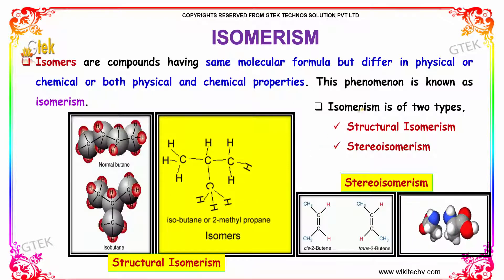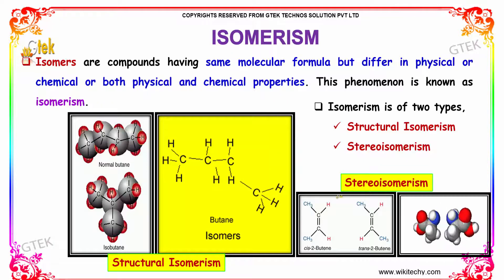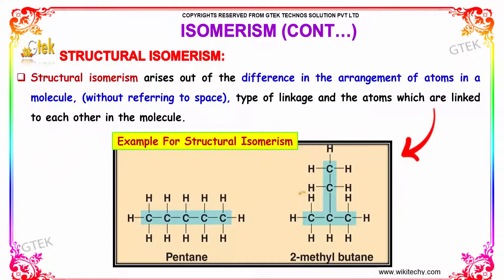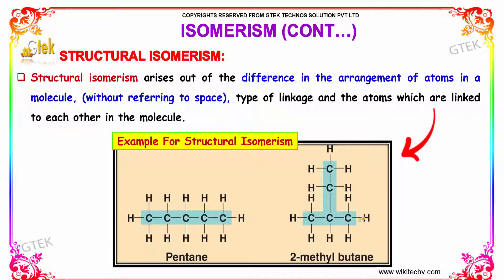Isomerism is of two types: Structural Isomerism and Stereoisomerism. Structural Isomerism arises out of the difference in the arrangement of atoms in a molecule, or the type of linkage and the atoms which are linked to each other. In this following example, Pentane and 2-methylbutane have the same molecular formula but different structure. This is known as structural isomerism.